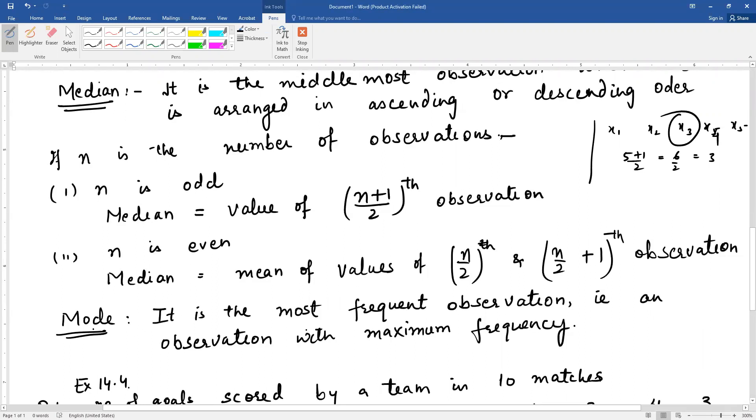Now next is mode. What is mode? The observation which occurs the most, or we can say the most frequent observation, or observation with maximum frequency. That is called mode.